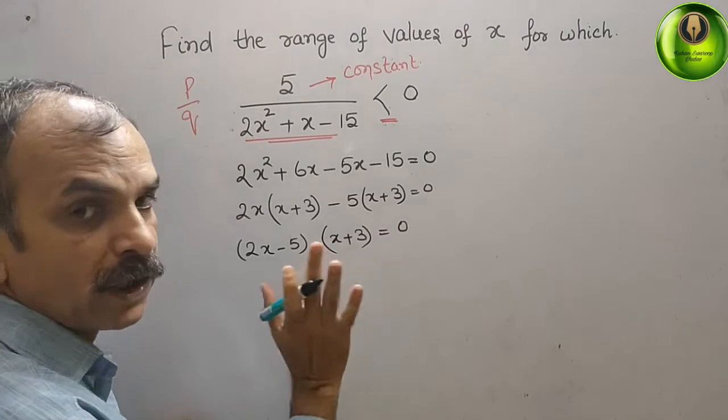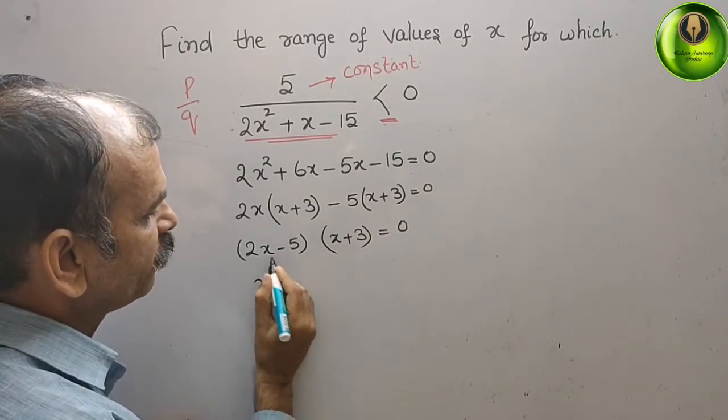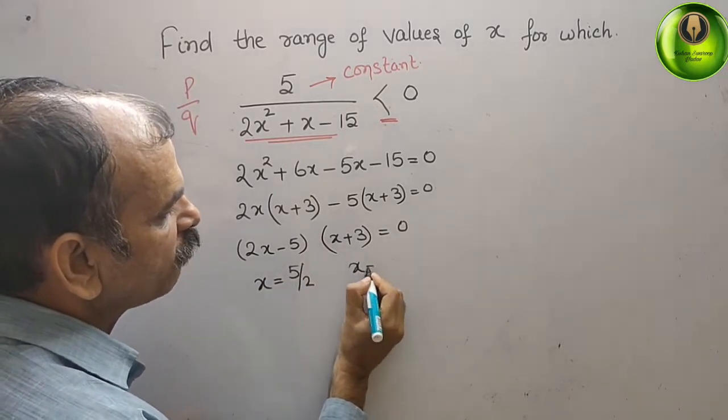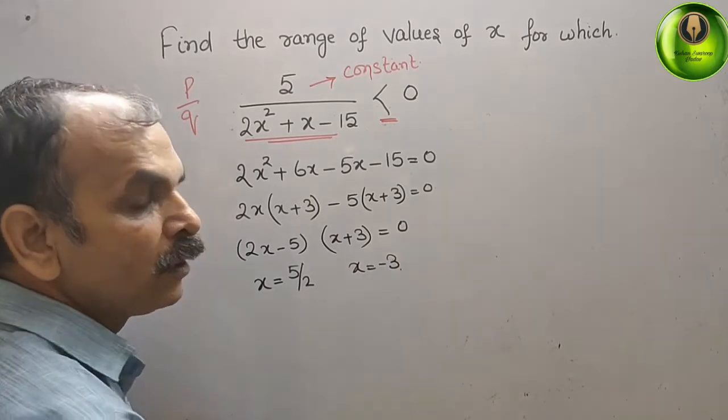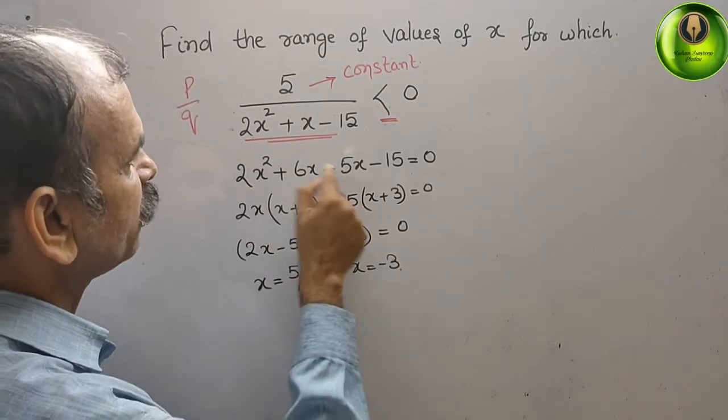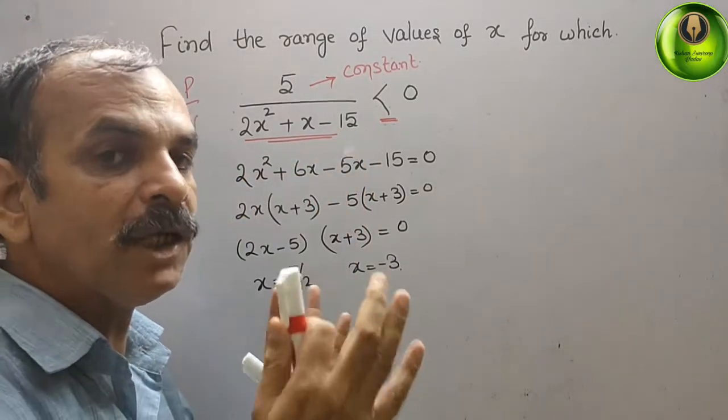Now you can see, what is your value of x here? x is equal to 5/2 and x is equal to -3. Now you can see that here the equation is positive, that means we will get a minimum point here.